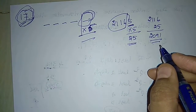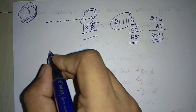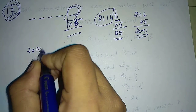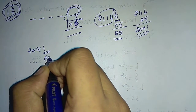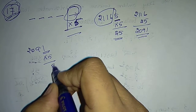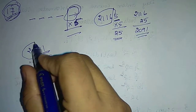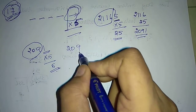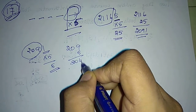Again, applying the same procedure to 2091: take the last digit, multiply it by 5 — answer becomes 5. Then subtract this from the remaining digits, we get 204.